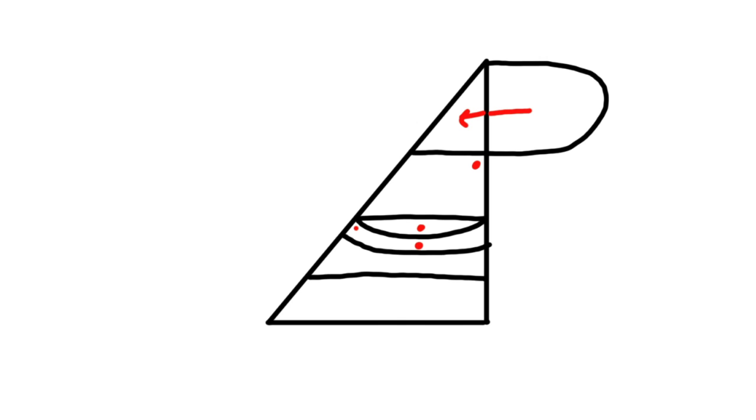We have our frontal sinus and our anterior ethmoid sinus draining via the infundibulum into the anterior portion of the semilunar hiatus. And finally, in the inferior meatus, below the inferior concha, we have the opening and drainage of our nasolacrimal duct.